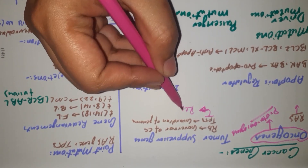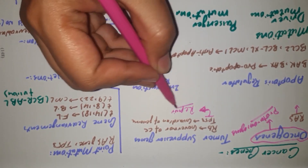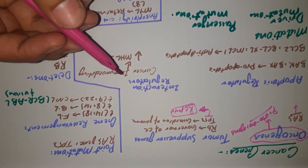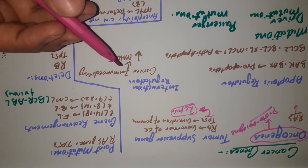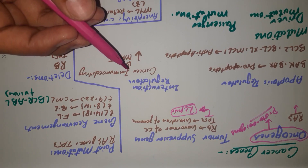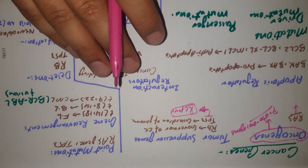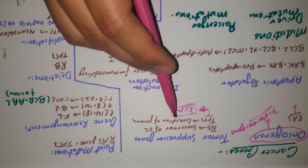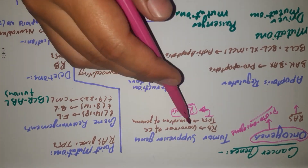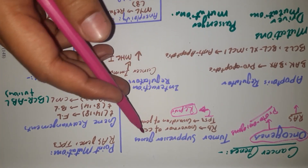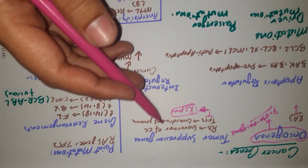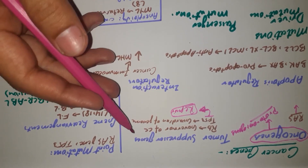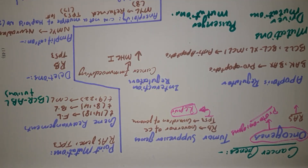If the damage is repaired, TP53 continues the cell cycle normally. However, if the damage is beyond repair, it either arrests the cell cycle completely or leads to apoptosis of the cell — that's why it is called guardian of the genome. These are tumor suppressor genes. If tumor suppressor genes get mutated, they can also lead to increased production of cells and increased production of tumors inside the body.